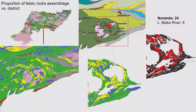Because we have the assemblage map now, we can really constrain it by assemblage so that we are not accidentally taking in a bunch of felsic rocks from some other assemblage. That area is essentially constrained now by assemblage, and then we can do a simple calculation to get the surface area. You can see for Noranda it's more than twice the amount of felsic rocks by proportion compared to the assemblage as a whole.